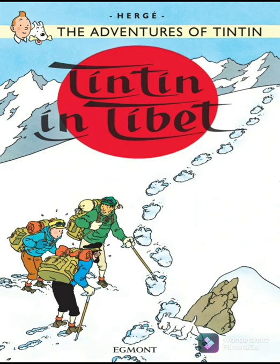While trying to climb uphill, and after having his pick-axe jammed with St. Elmo's fire, Haddock loses his grasp and dangles perilously down the cliff wall, endangering Tintin who is tied to him. Haddock tells Tintin to cut the rope to save himself, but Tintin declines. Tarki, inspired by Tintin's selflessness, returns just in time to save both of them.